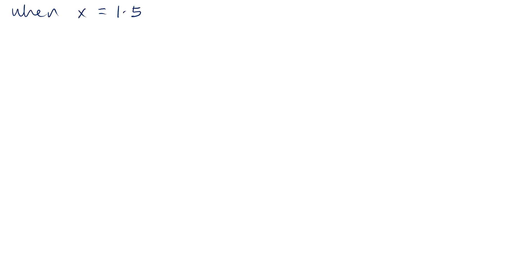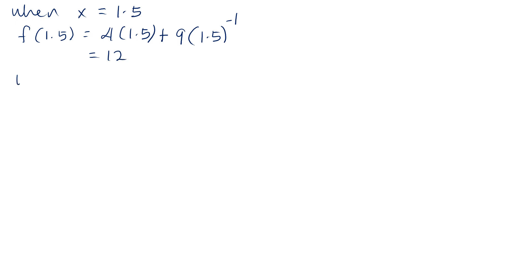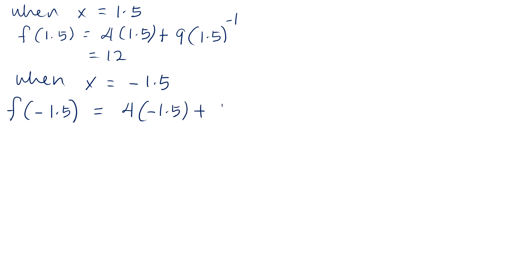When x is equal to 1.5, substitute x equal to 1.5 into f(x): we have 4 times 1.5 plus 9 times 1.5 to the power of negative 1, giving 12. Similarly, substituting x equal to negative 1.5: we have 4 times negative 1.5 plus 9 times negative 1.5 to the power of negative 1, giving negative 12.